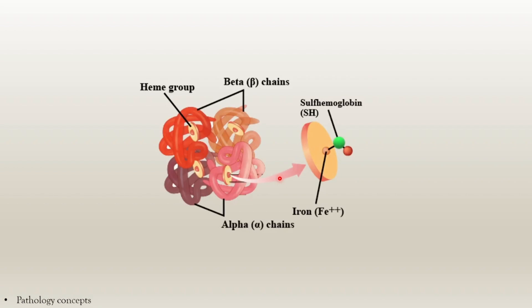Next is sulfhemoglobin. When a sulfur group is combined with hemoglobin, it is called sulfhemoglobin. It is a rare condition in which a sulfur atom oxidizes the heme moiety, making hemoglobin incapable of carrying oxygen, leading to hypoxia and cyanosis. It occurs in patients taking sulfur medications or due to increased sulfur-producing bacteria in the intestine in the setting of chronic constipation.